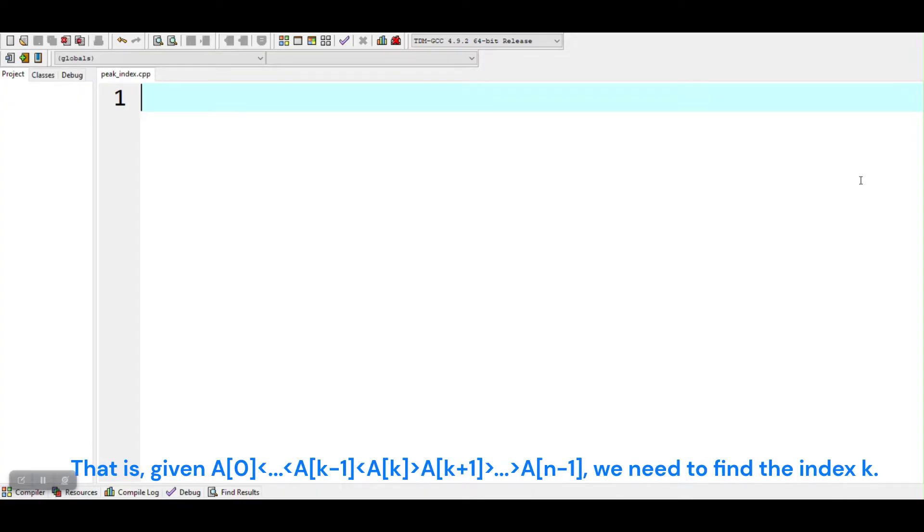We need to find the index k. Note that the peak element is neither the first nor the last element of the array. Only one peak element exists in the array.